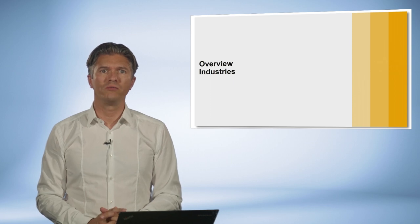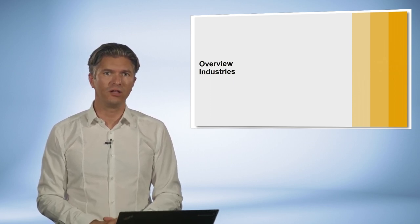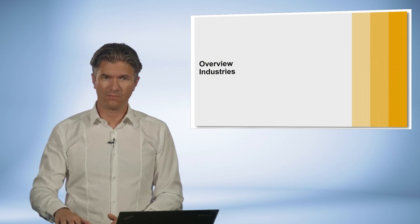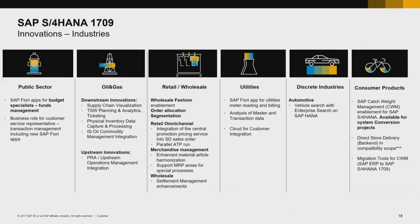We have covered a lot of ground already with the line of businesses highlights. Let's have a look at the innovations and enhancements for industries now. I will start with public sector. A new business role for the customer service representative is included. TRM — tax and revenue management — provides transactional Fiori apps to search from bundles, several smart business apps, and also several main transactions in TRM. Additionally, there is a Fiori app for the budget specialist. All apps are available from the launch pad.